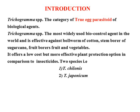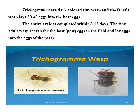It includes two major species being used: Trichogramma chilonis and Trichogramma japonicum. Trichogramma are wasp-like structures having a dark-colored tiny structure, and the female wasp lays about 20 to 40 eggs into the host eggs. The entire life cycle is completed within 8 to 10 days. The tiny wasp searches its host pest eggs in the field and lays its eggs into the eggs of the pest.